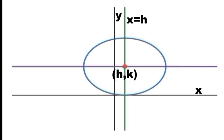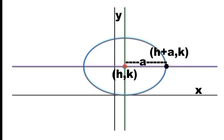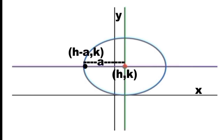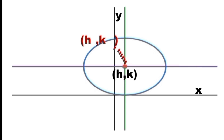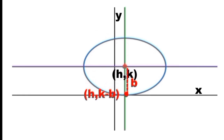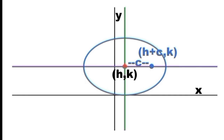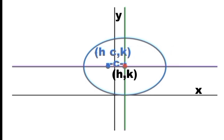The distance from the center to the right side vertex is A, so the coordinates of this vertex are (H plus A, K). The left side vertex also has distance A, but since the direction is towards the left, its coordinates are (H minus A, K). Along the minor axis, the vertex going up has coordinates (H, K plus B), and the vertex going downward has coordinates (H, K minus B). Going to the right from the center with distance C is one focus at (H plus C, K), and going to the left with distance C is the other focus at (H minus C, K).